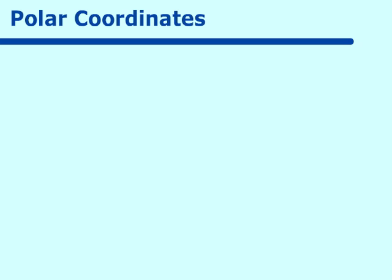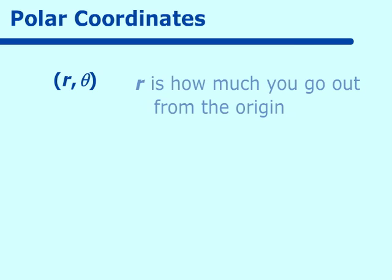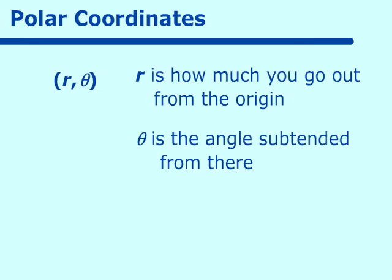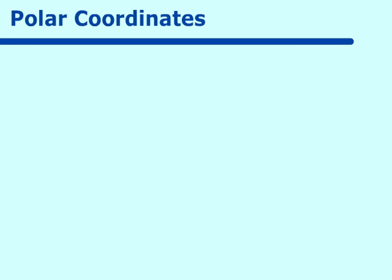Let's go on and look at polar coordinates. Our polar coordinates are written in r and theta. R means how much you go out from the origin, and theta means the angle subtended from there. So instead of x, y — which would be the Cartesian coordinate system — we use r and theta. Eventually we will be going back and forth from x, y to r and theta, but right now we're just going to work on r and theta.